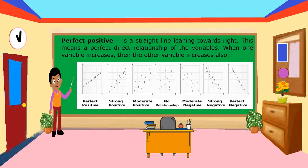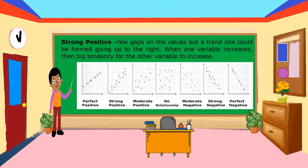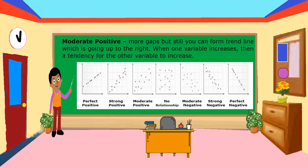When we say perfect positive, it is a straight line leaning towards the right — this means a perfect direct relationship of variables. When one variable increases, the other variable increases also. Strong positive has few gaps on the values but a trend line could be formed going up to the right — when one variable increases, there is a big tendency for the other variable to increase. Moderate positive has more gaps but you can still form a trend line going up to the right.